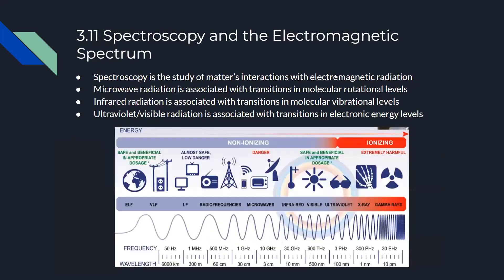Section 3.11 covers spectroscopy and the electromagnetic spectrum. Spectroscopy is the study of matter's interactions with electromagnetic radiation. Microwave radiation is associated with transitions in molecular rotational levels. Infrared radiation is associated with transitions in molecular vibrational levels. Ultraviolet or visible radiation is associated with transitions in electronic energy levels. These distinctions are likely to appear on exam questions.